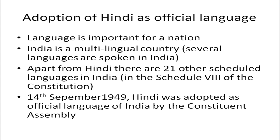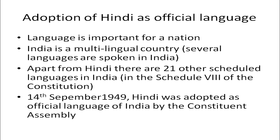Apart from Hindi, there are 21 other scheduled languages in India. Schedule 8 of the constitution lists the languages which are considered to be the official languages in India. So in schedule 8 of our constitution, apart from Hindi there are 21 other scheduled languages. Hindi was adopted on 14 September 1949 by the constituent committee as the official language of India. Along with this, English was also accepted as the co-official language.